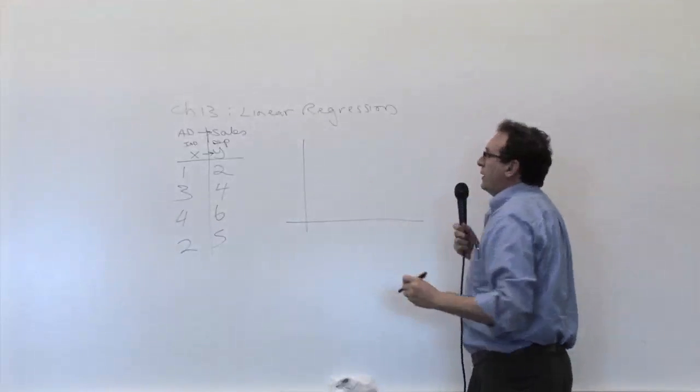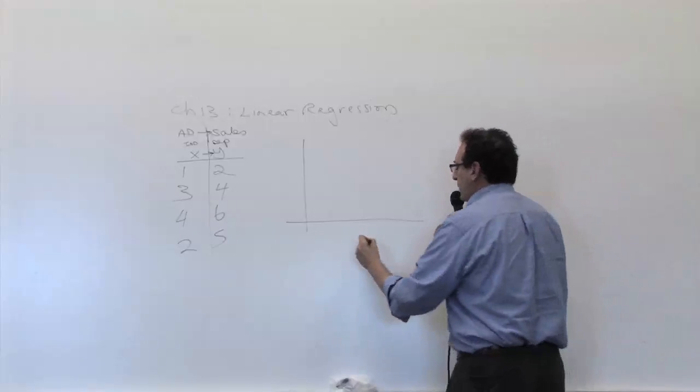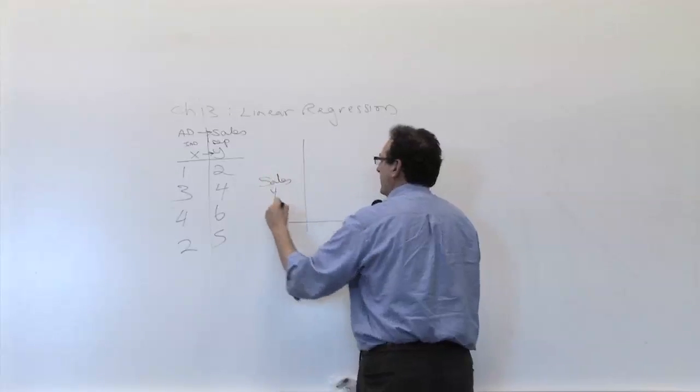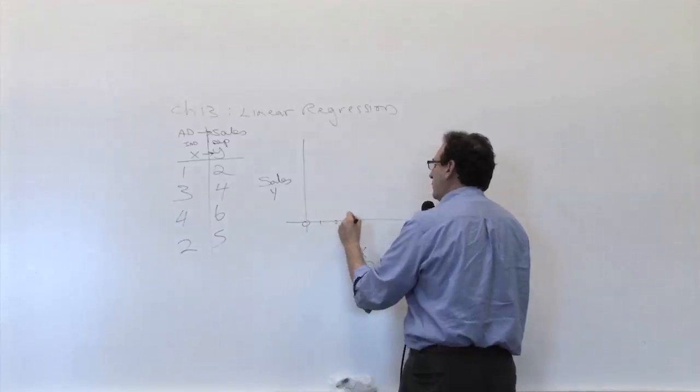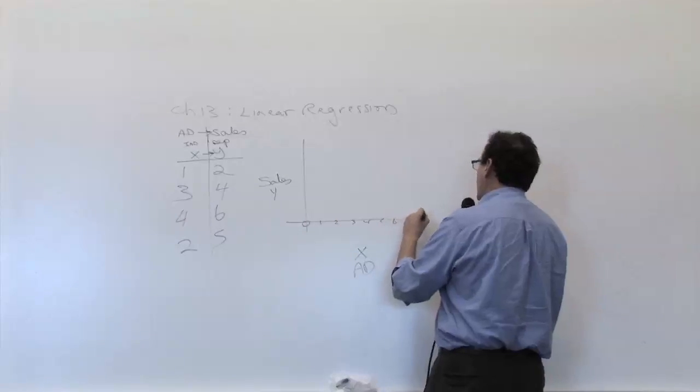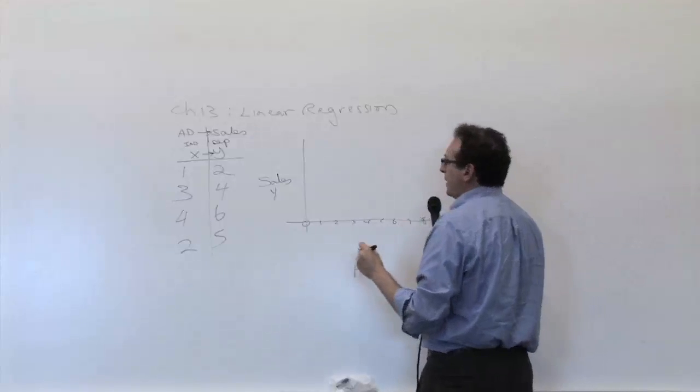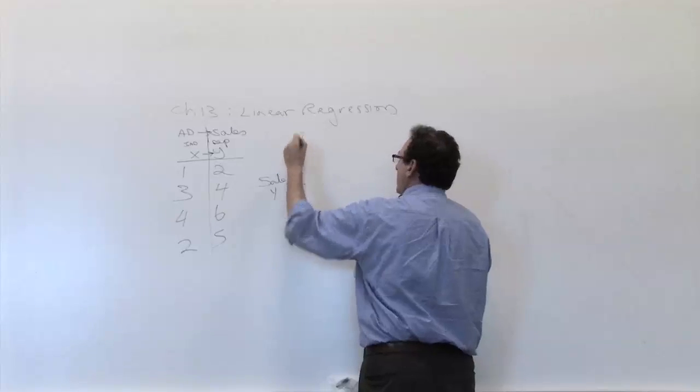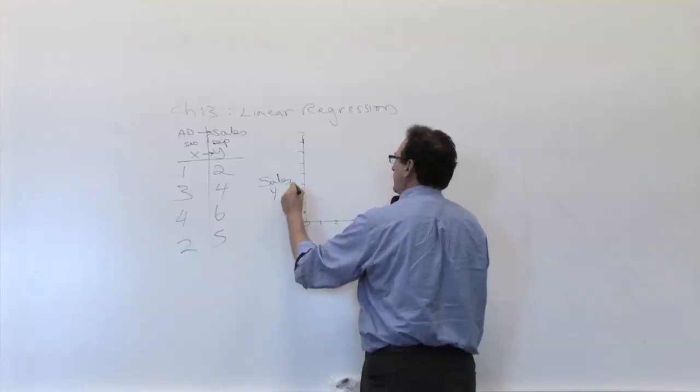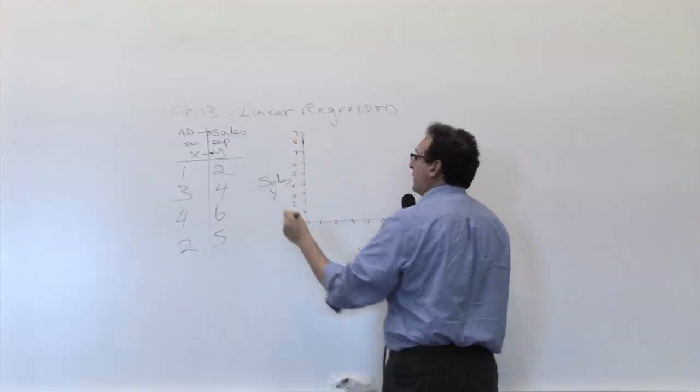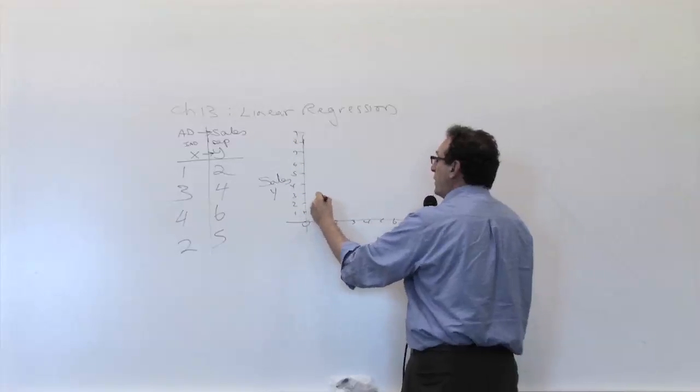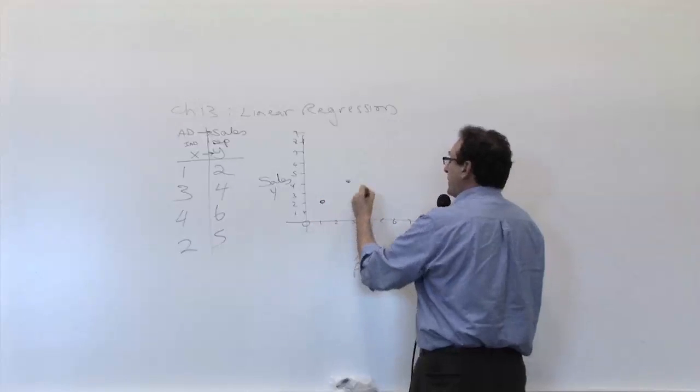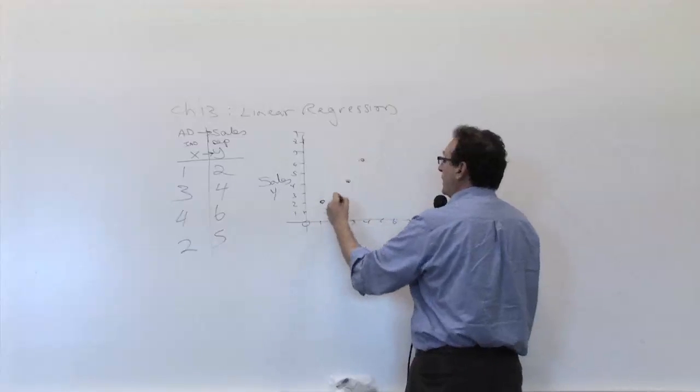So what did we say last time? We said the first thing we're going to try to do is to graph it, so we're going to put X for advertising, Y for sales. It starts with 0, 0, 1, 2, 3, 4, 5, 6, 7, 8, 9. And the first point, 1 on the X, 2 on the Y, so the first dot is here. 3 on the X, 4 on the Y, so the second dot is here. 4 on the X, 6 on the Y is here. And 2 on the X, 5 on the Y is here.